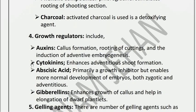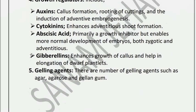The fourth constituent is growth regulators, also called growth hormones. These include auxins, cytokinins, abscisic acid, and gibberellins. Auxins are involved in callus formation, rooting, and induction of somatic embryogenesis. Cytokinins are involved in adventitious shoot formation. Abscisic acid is generally a growth inhibitor but is necessary for the normal development of embryos, including zygotic and adventitious roots.